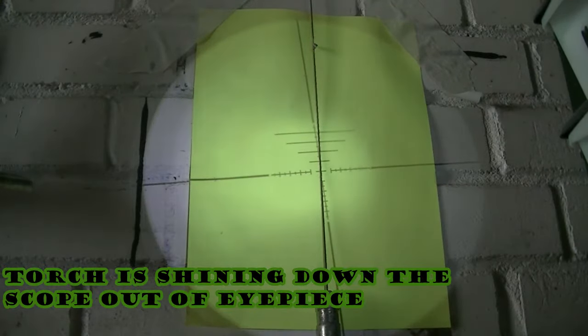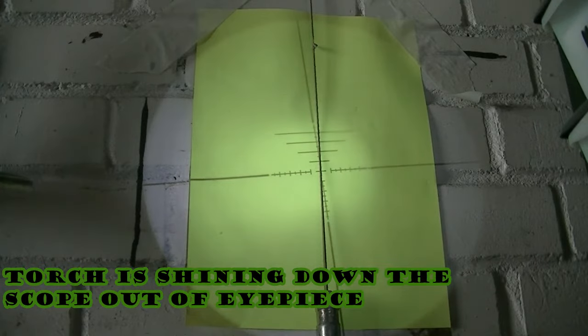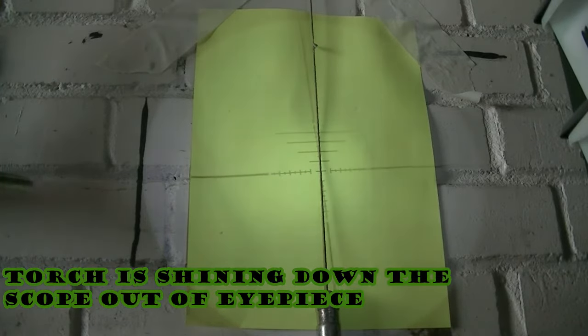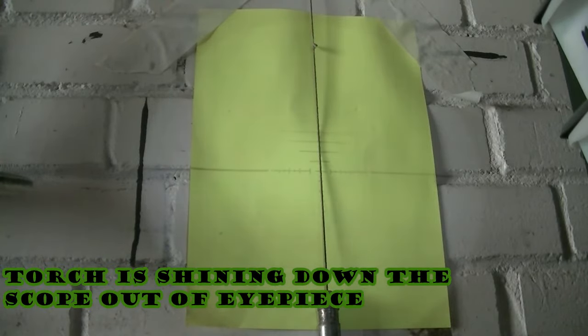There we go, look at that. See how wonky they are? Now I've undone the scope mounts, I can just twist them round, get them straight, nice and level.